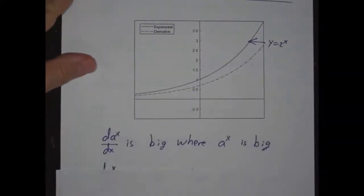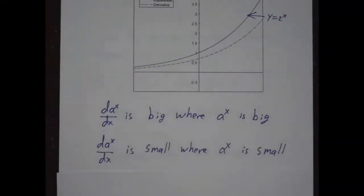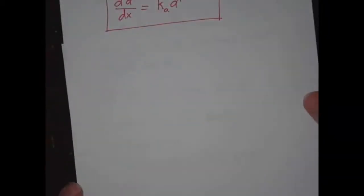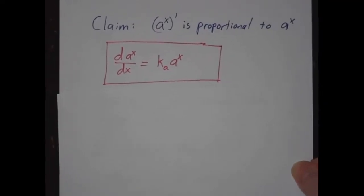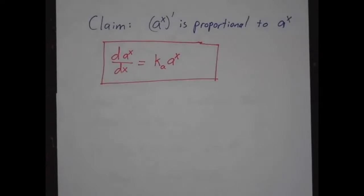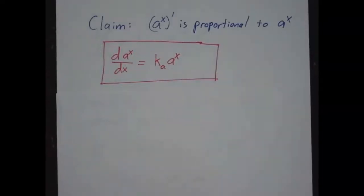So whenever you have an exponential, the derivative is big wherever the function is big. The derivative is small wherever the function is small. And I claim that, in fact, the derivative is proportional to the function itself. So the derivative of a to the x is some constant, and that constant depends on a times a to the x.